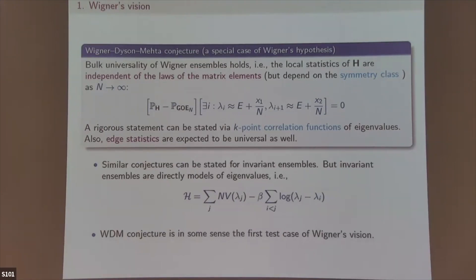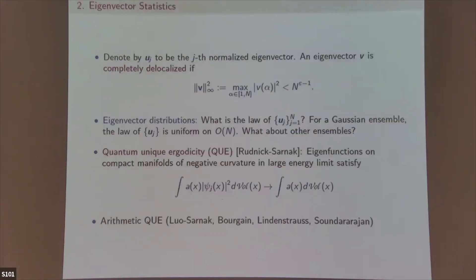The reason Wigner started to think about the Schrödinger equation was that with so many particles interacting, it's so complicated — why not think of it as random? This was his first try, but he couldn't solve the equation, so he went to random matrices.